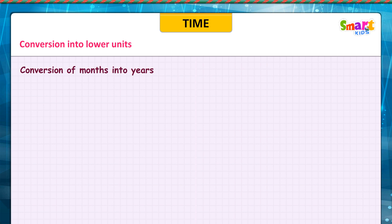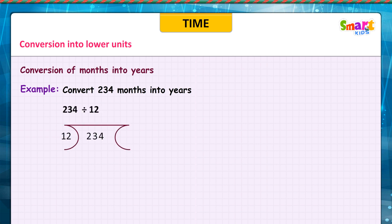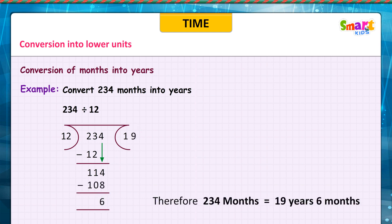Conversion of months into years. Example: convert 234 months into years. 234 divided by 12: 12 goes 19 times with a remainder of 6. Therefore, 234 months is equal to 19 years and 6 months.